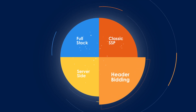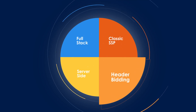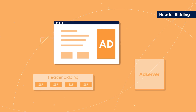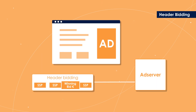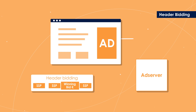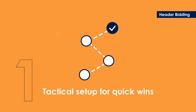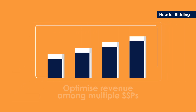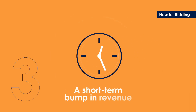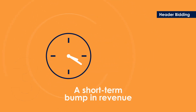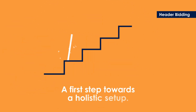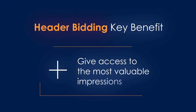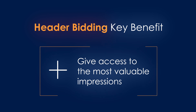Next up, header bidding. How does it work? Trading first takes place in the header of a web page, then through an ad server. This is best if you want a tactical setup for quick wins — to optimize revenue among multiple SSPs, see a short-term bump in revenue, and make a first step towards a holistic setup. The key benefit? It gives buyers access to the first and most valuable impressions.